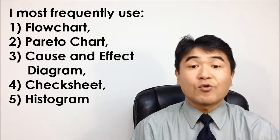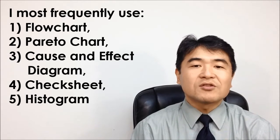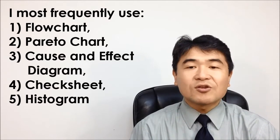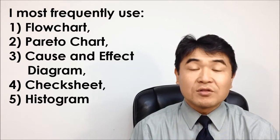In Lean Sigma projects, we use all of the 7 QC tools. My company is in the food industry. I most frequently use the flow chart, Pareto chart, cause and effect diagram, check sheet, and histogram in that order.